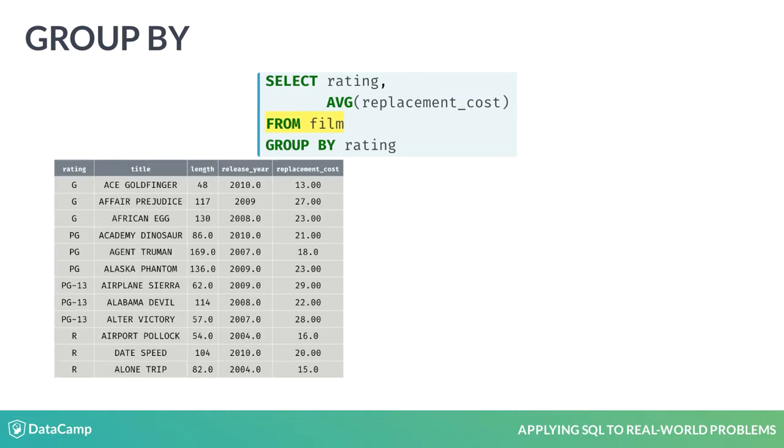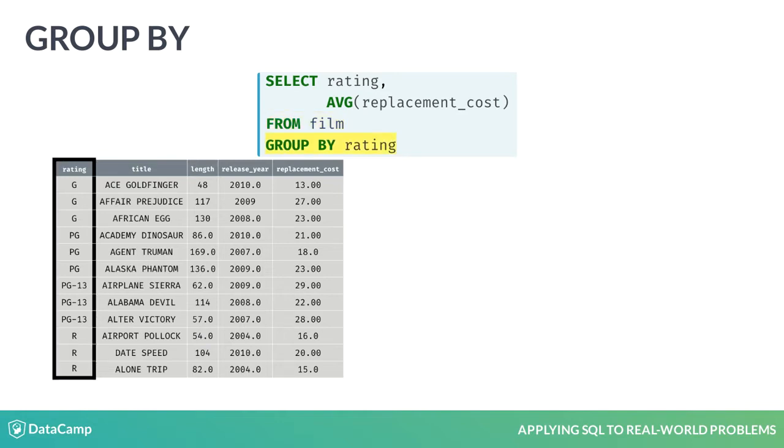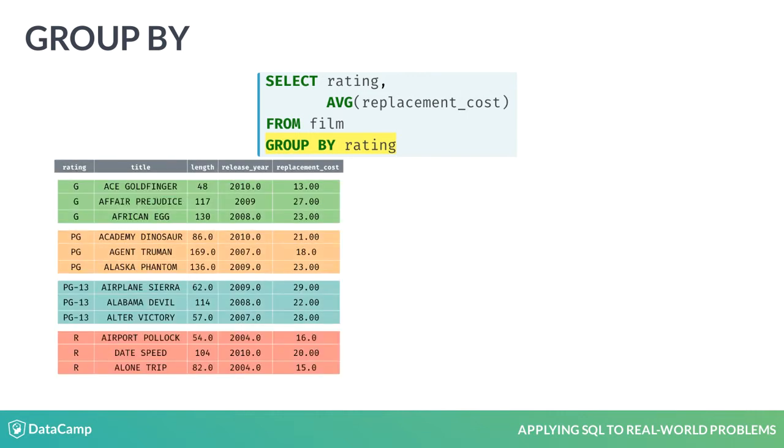An excerpt of the data in the film table is provided here to illustrate how aggregate functions work. Every aggregate function requires a GROUP BY statement to specify which column or columns are used for aggregation. In this query we aggregate by the rating of the film. You can imagine the GROUP BY statement partitioning the data just like so.